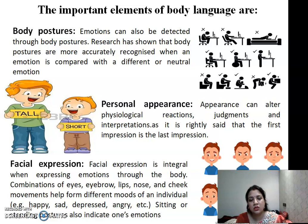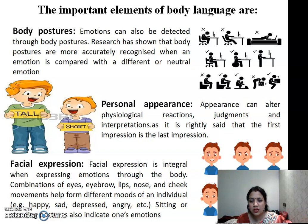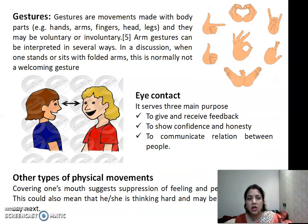The next element is facial expression. Facial expression is integral when expressing emotions through the body. The combination of eyes, eyebrows, lips, nose, and cheek movements helps form different moods — happy, sad, depressed, angry. Your facial expression shows what is running inside your mind and what type of thought process or feeling you have. If you are happy, automatically you have a sweet or huge smile. If you are in tension, that expression also shows on your face. Others can conclude it, and they may ask what's the problem. Even if you want to hide it, you cannot — that is the role of facial expression.